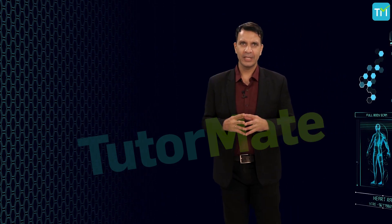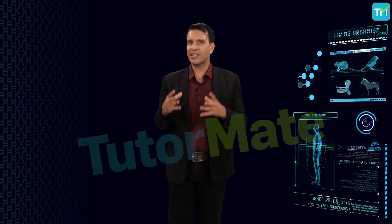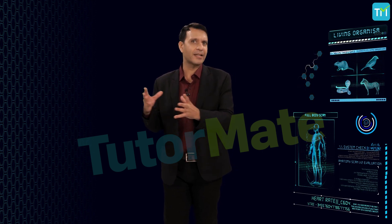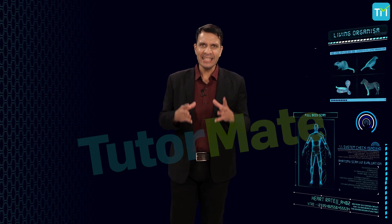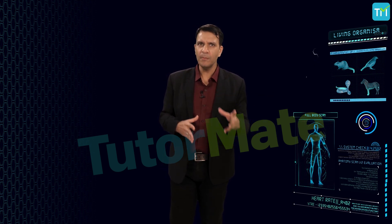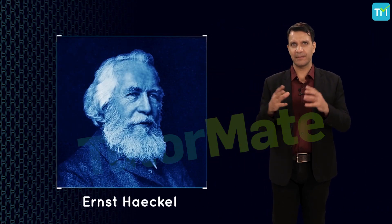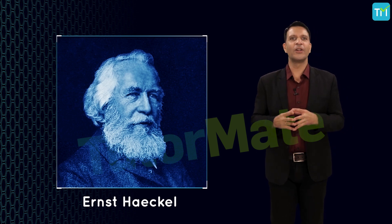Later on, some taxonomic studies indicated that certain organisms did not strictly fall either under plant kingdom or animal kingdom. And accordingly, in 1866, a German zoologist Ernst Haeckel raised a third kingdom for unicellular organisms. He called it Protista.